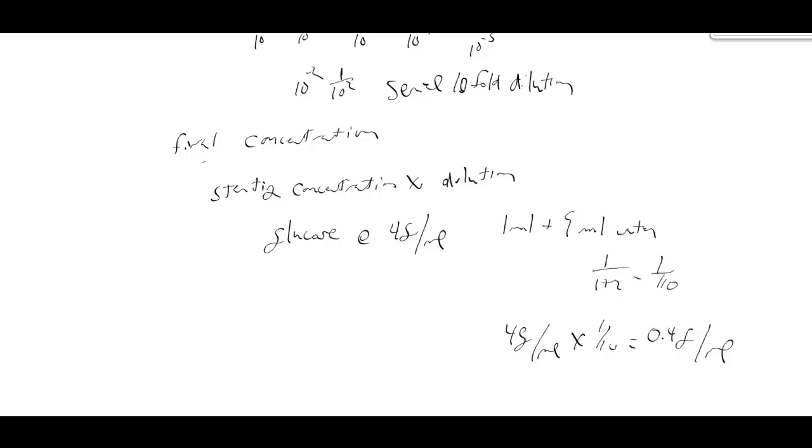And 0.4 gram is a tenth of 4 grams. So by diluting it tenfold, we've got 1 tenth the concentration.